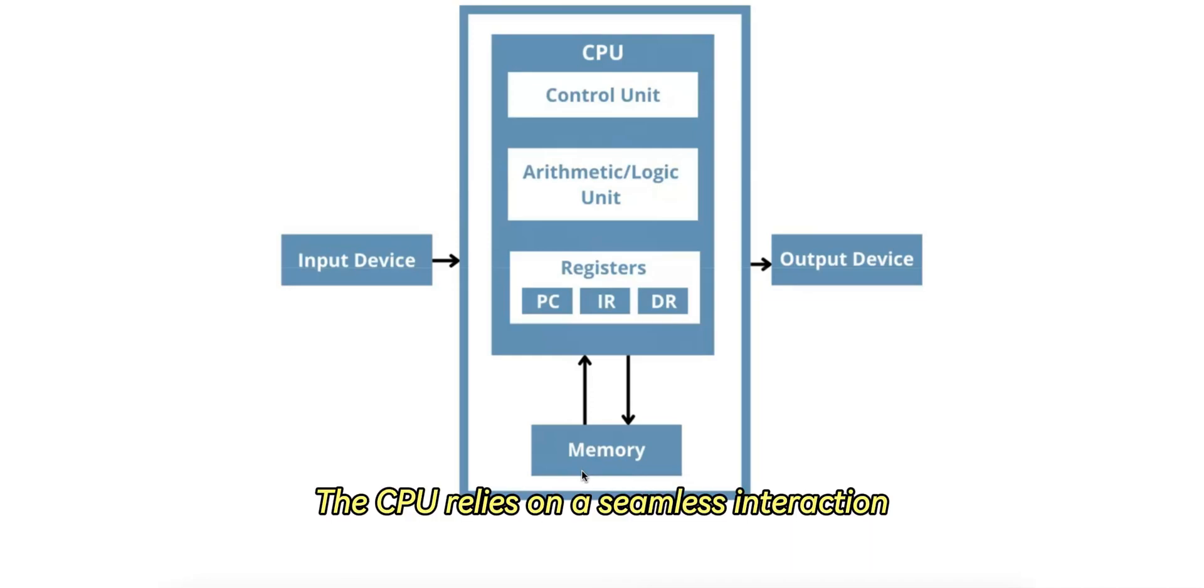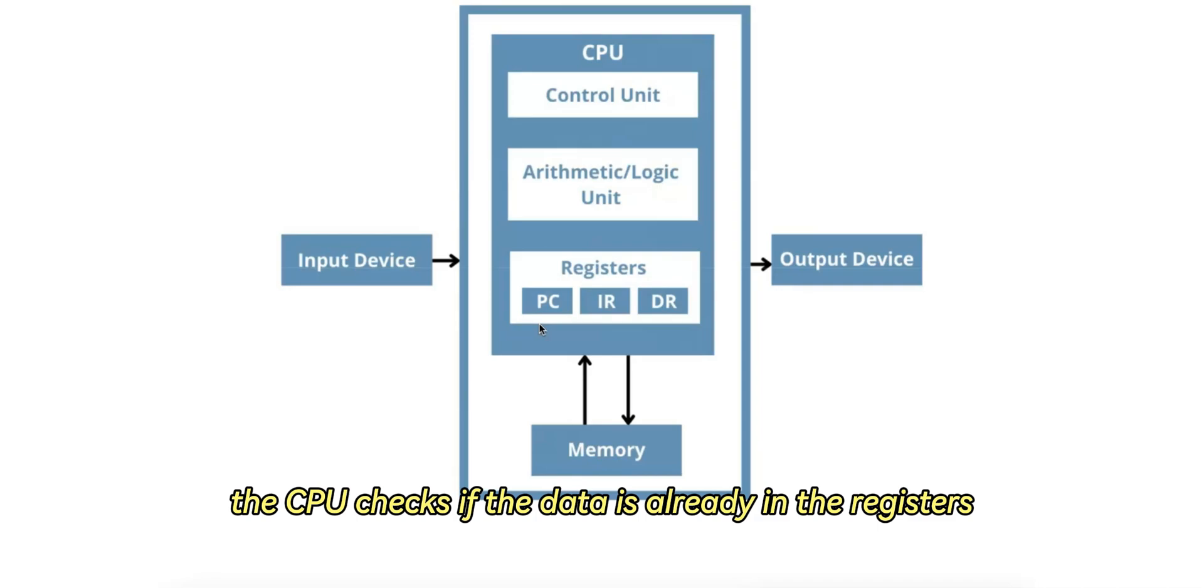How do registers and data memory interact? The CPU relies on a seamless interaction between registers and data memory, or RAM, to execute programs efficiently. The CPU fetches an instruction stored in RAM and places it in a register for execution. If the instruction involves data, for example two numbers to add, the CPU checks if the data is already in the registers. If not, it fetches the data from RAM and places it in a register.